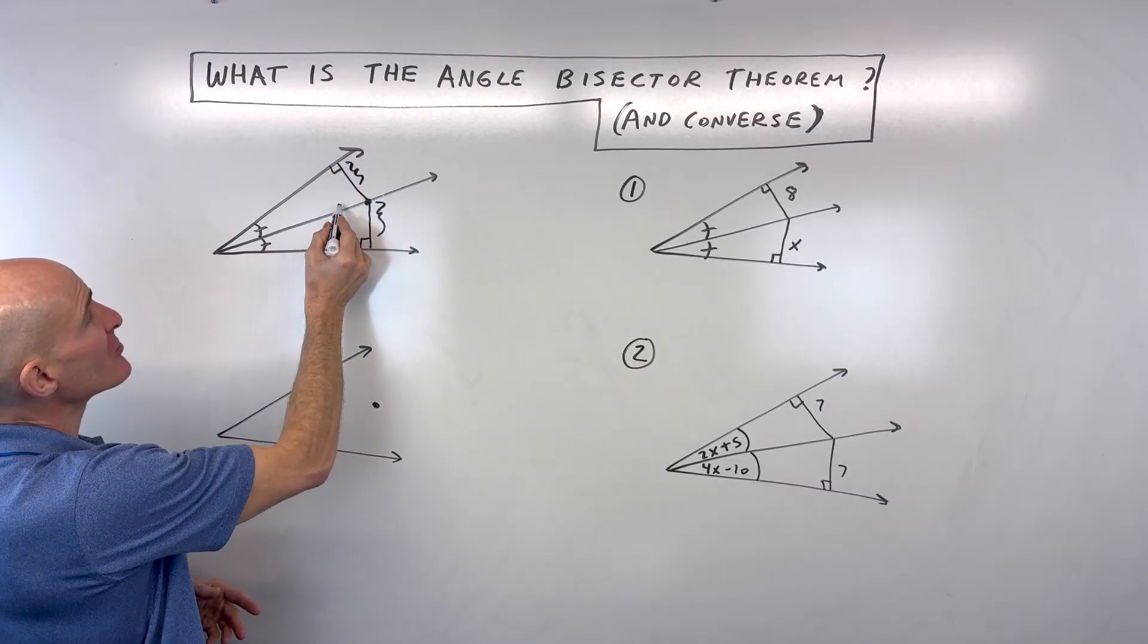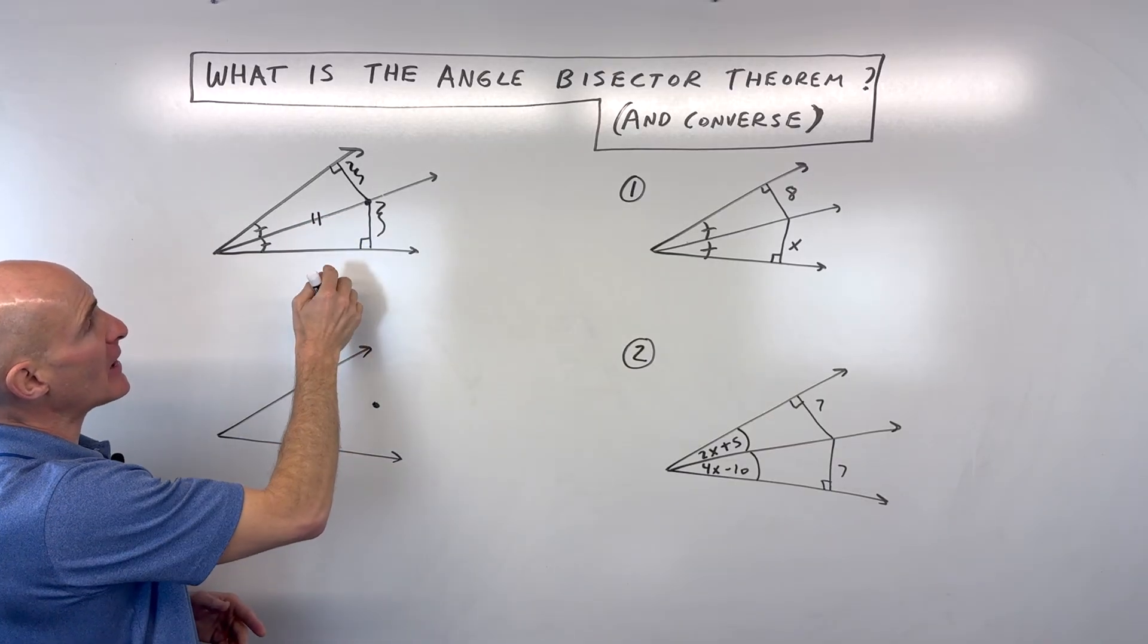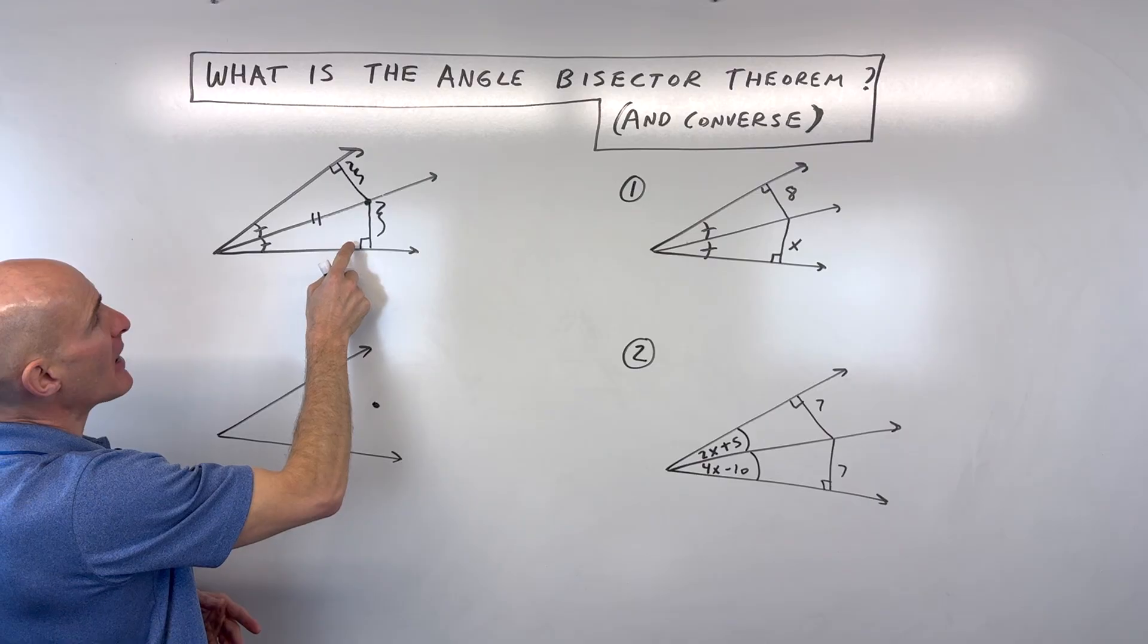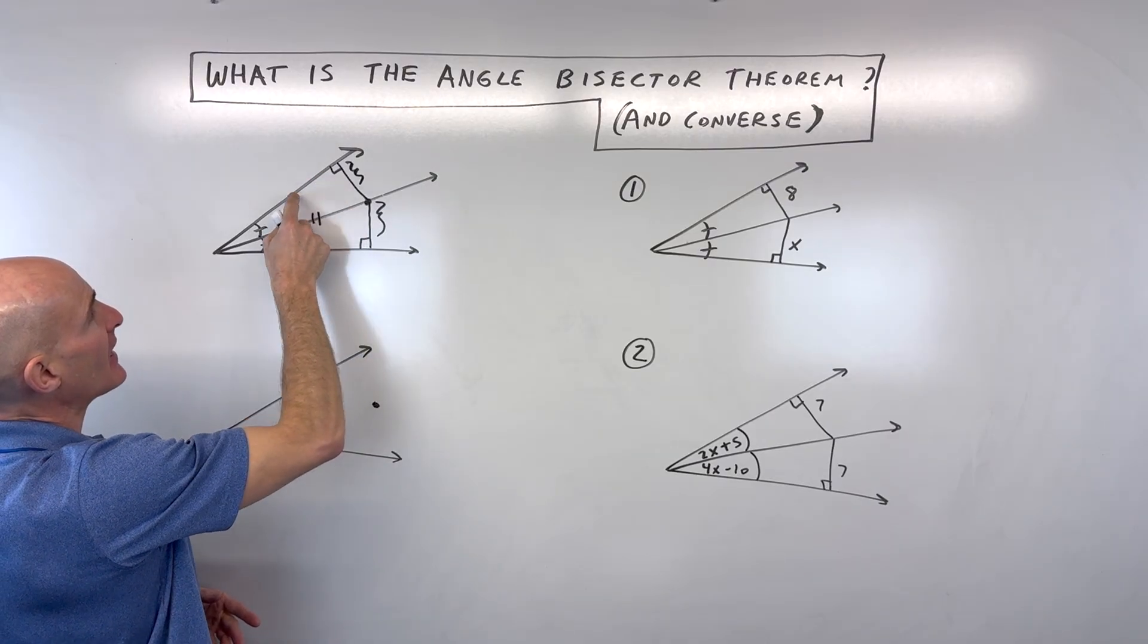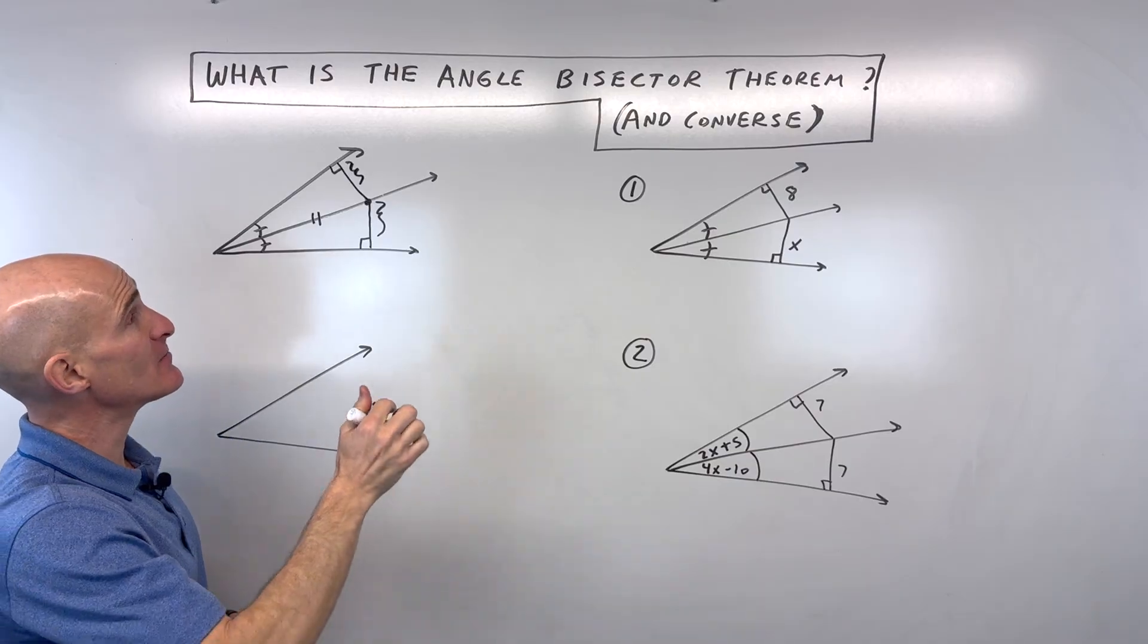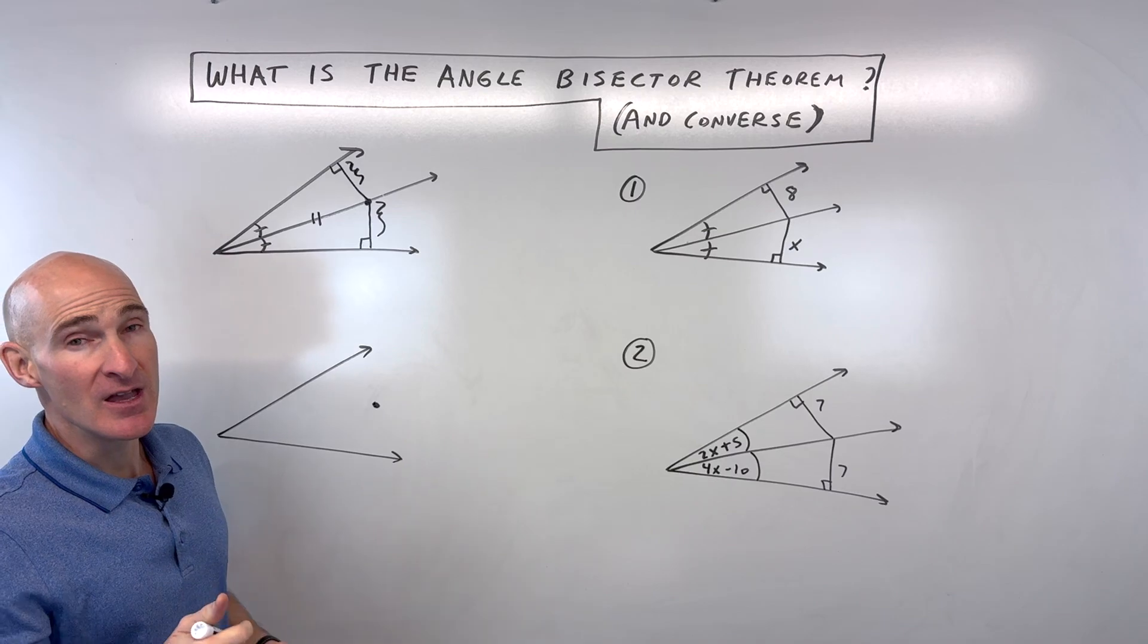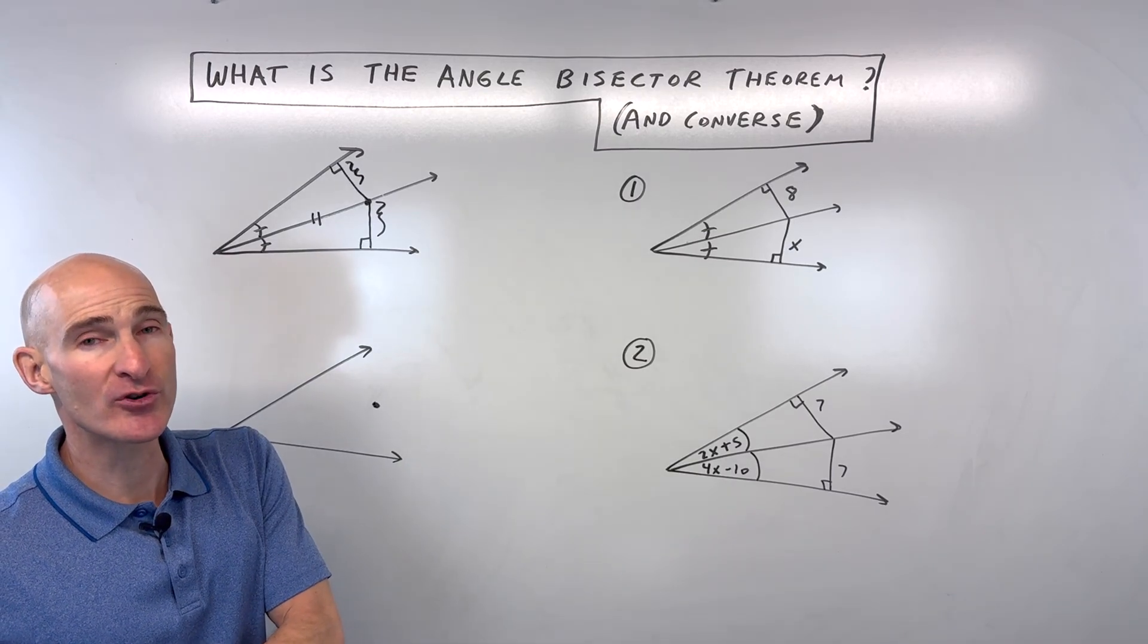Well, notice that they share this side in between the two triangles by the reflexive property. And you can see that these are both right triangles, and by the angle angle side, the two triangles are congruent. So therefore, by CPCTC, the corresponding parts of congruent triangles will be congruent. So that's why it works. It's based on congruent triangles.